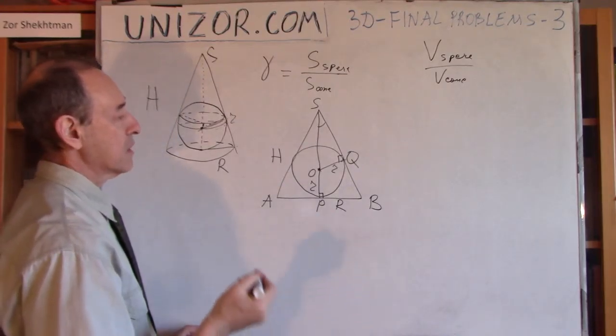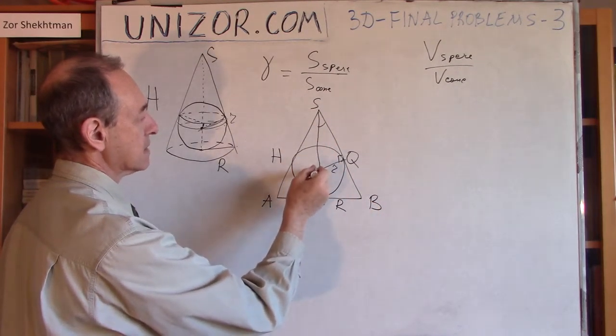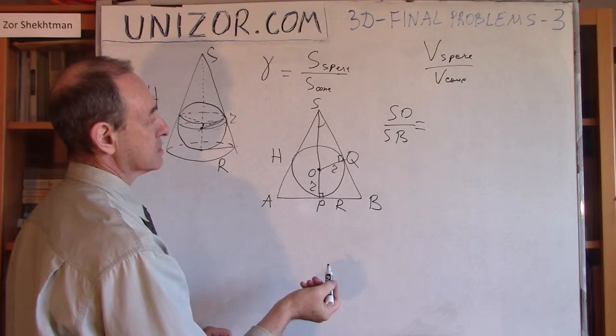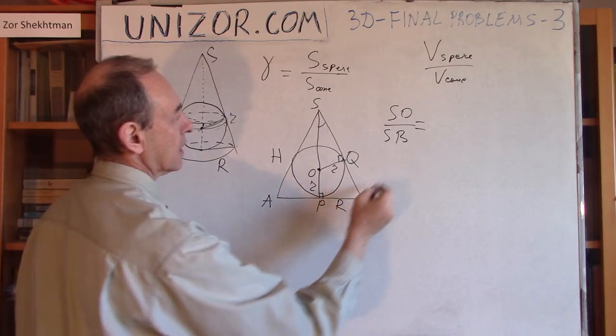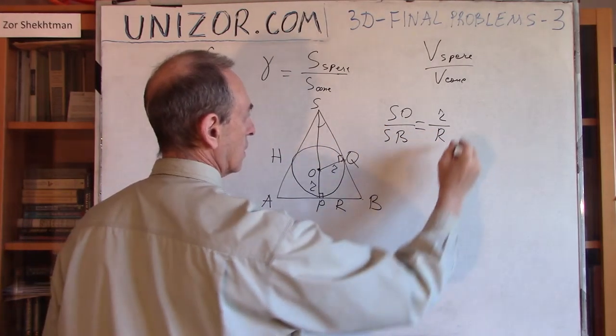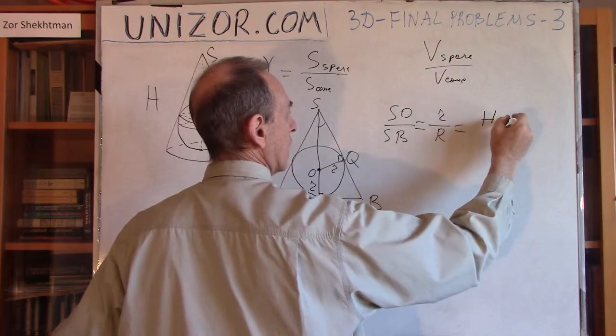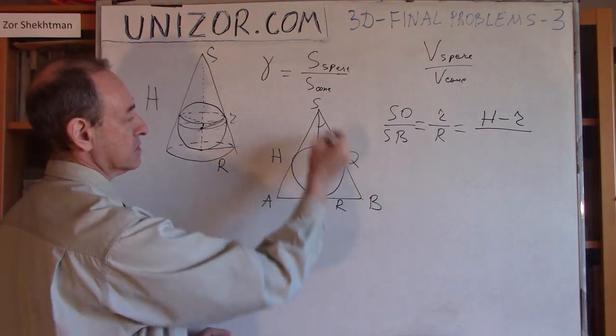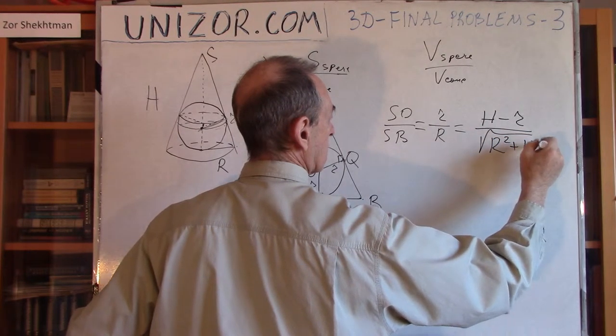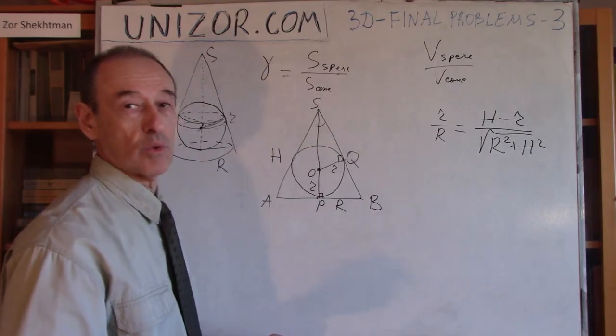They are similar, which means we can use some proportionality. Let's compare the proportion between the hypotenuses. Hypotenuse one is SO, another is SB. This is supposed to be compared with the same ratio between smaller catheter - lowercase r and capital R. What is SO? SO is H minus lowercase r. And what is this hypotenuse SB? This is H and this is R, so it's square root of R squared plus H squared.